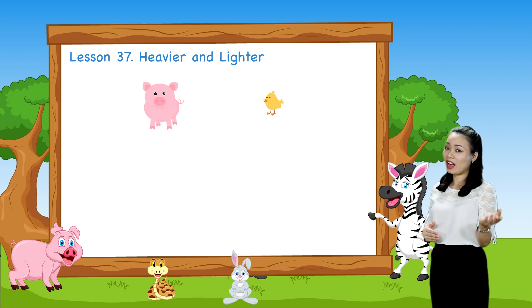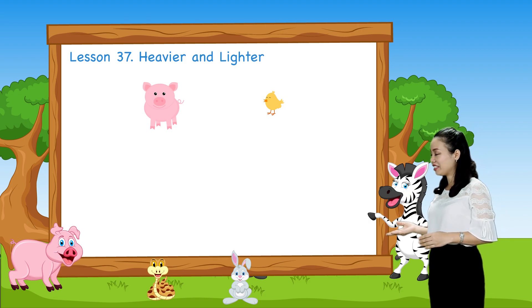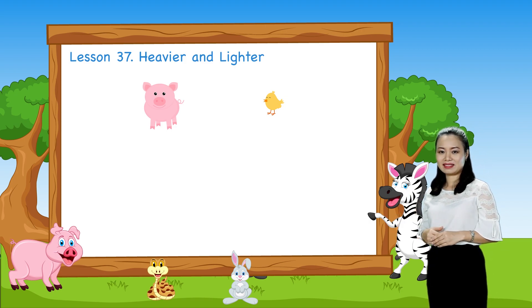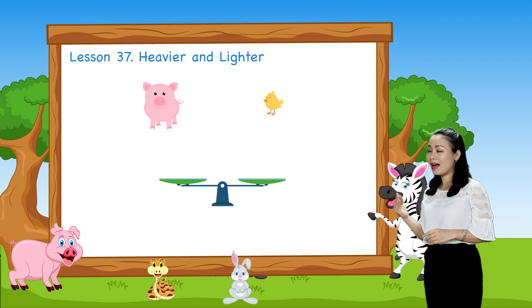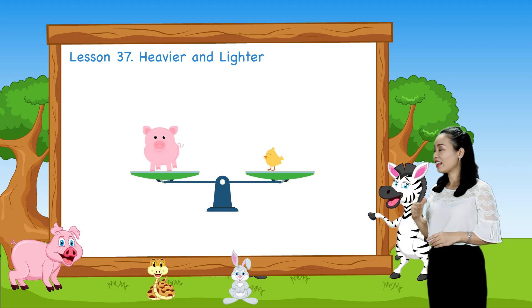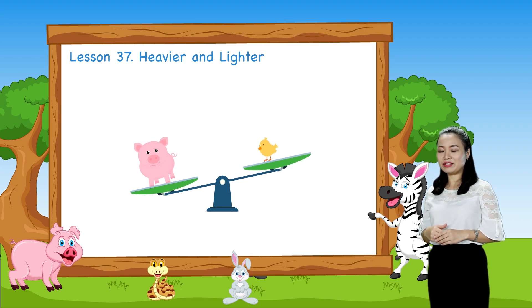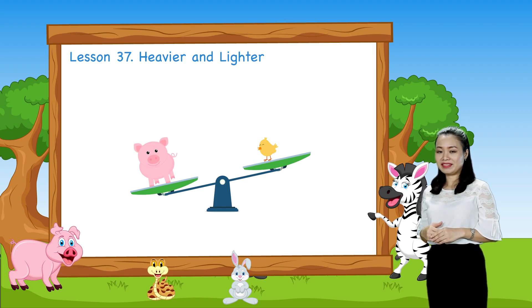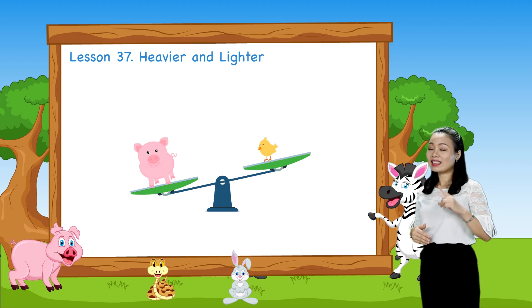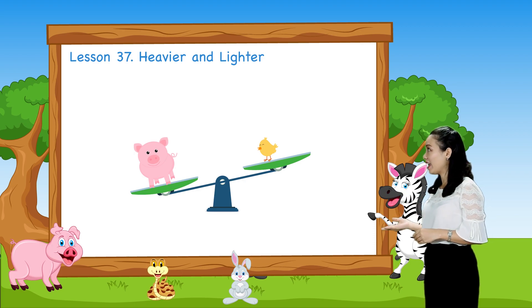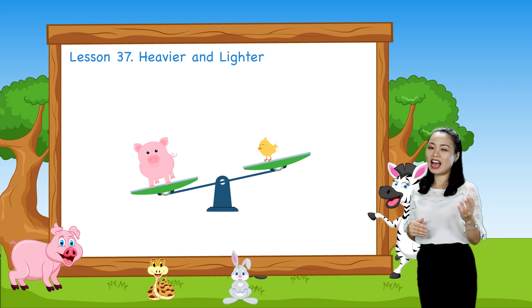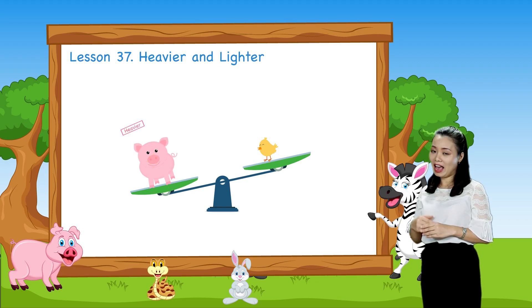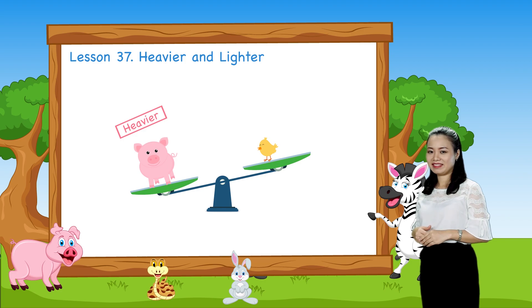Look, we have a pig and a chicken. If we put them on balance scales, the beam is not in balance. This means their weights are not equal. So here we say the pig is heavier than the chicken or the chicken is lighter than the pig.